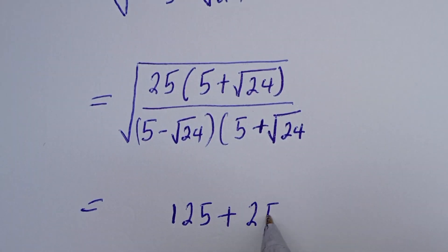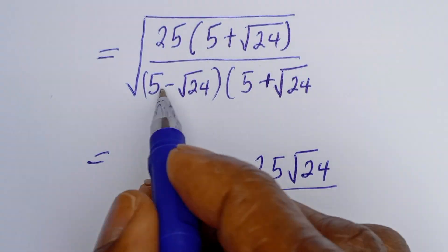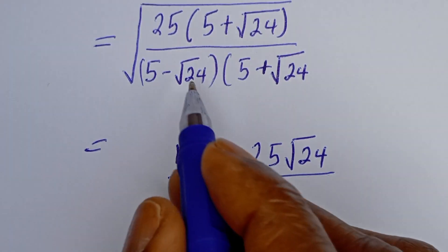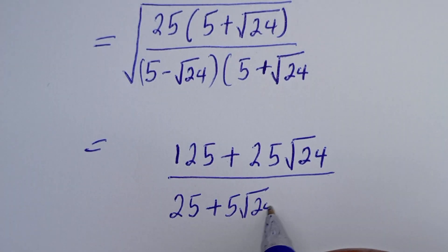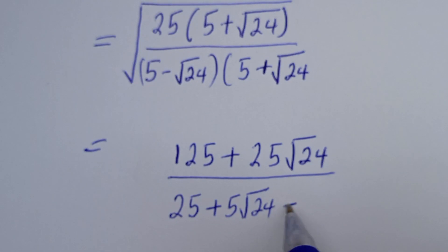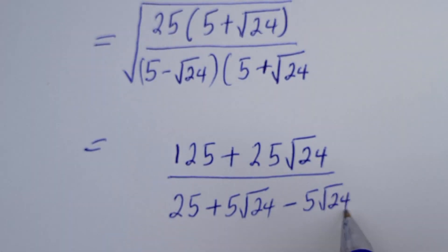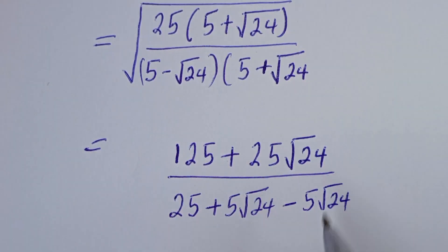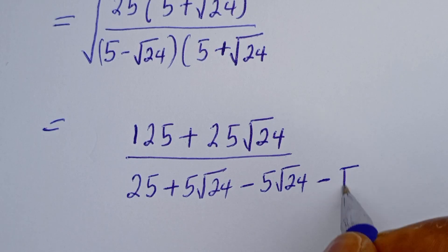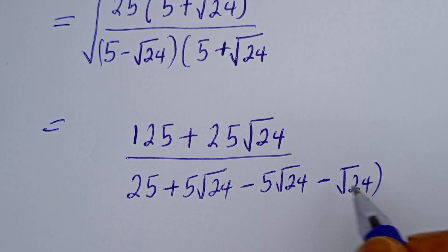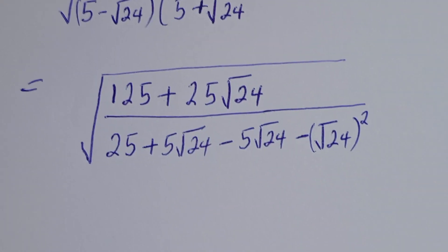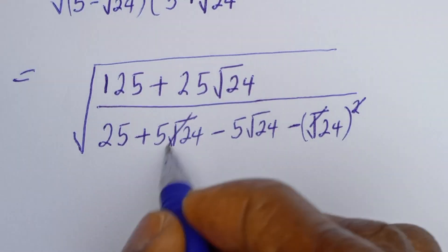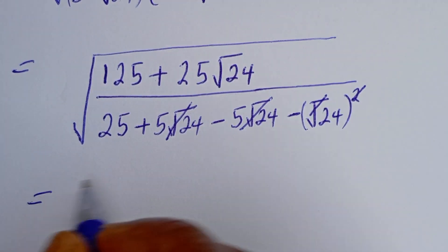Divided by 5 times 5 that is 25, then 5 times root 24 that is plus 5 root 24, then minus root 24 times 5 that is minus 5 root 24, then minus root 24 times root 24. From here, the plus 5 root 24 and minus 5 root 24 will cancel each other.